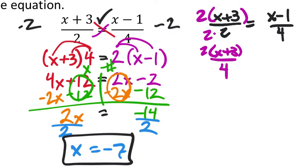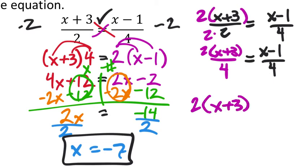And then this equals what we still had up there with x minus 1 over 4. So now that I force the denominators to be the same, the denominators match, and so then I would have 2 times x plus 3 equals now just x minus 1.